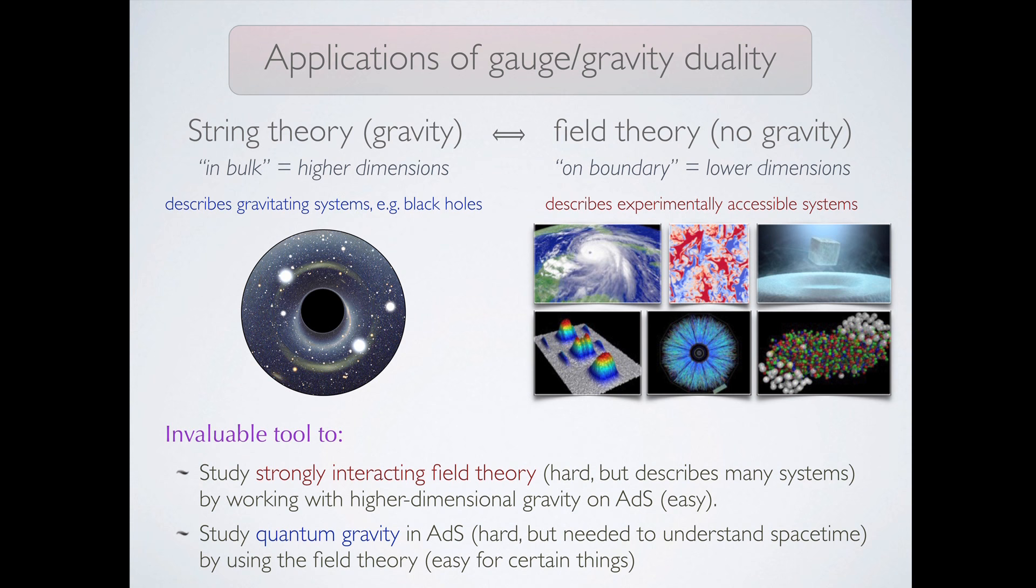The systems are also experimentally accessible, and the black hole describes things ranging as widely as cold atoms, which are some micro-Kelvin temperatures, to the hot plasma produced in colliders, which is in trillions of Kelvin. So spanning almost 20 orders of magnitude. Still described by the same type of black hole. All right, so this gauge-gravity duality has been an invaluable tool, both for studying this strongly interacting field theory systems, which is hard because it's strongly interacting, but describes many systems that we're familiar with and want to understand deeper, by working on the higher dimensional gravity in AdS, which is much easier. But conversely, we can also study quantum gravity in AdS, which is very hard, but of course needed to understand the fundamental nature of spacetime and so forth, by using the field theory, which for some respects is much easier.